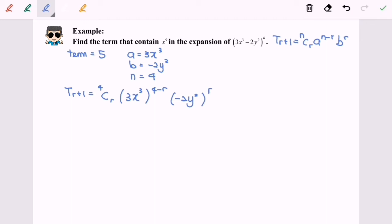Now we need to expand by using the properties of indices. So ⁴Cᵣ, 3^(4-r), x^(12-3r) after using the properties of indices, followed by (-2)^r and then y^(2r).